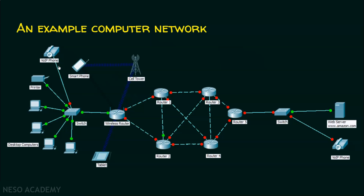I brought in the VoIP phone for a reason. Assume this person is sending some email data to an email server through router 1. At the same time, two people are talking over a VoIP phone through the internet. Router 1 is experiencing both types of traffic simultaneously — one is the email traffic, and the other is voice traffic, which is real-time communication. Now the question is: which data will router 1 give priority to — the real-time communication or the email data?